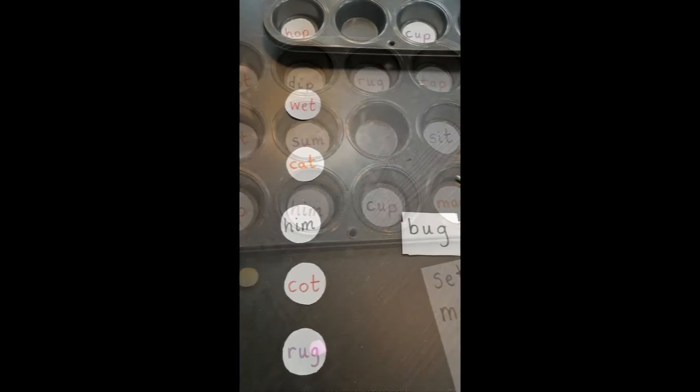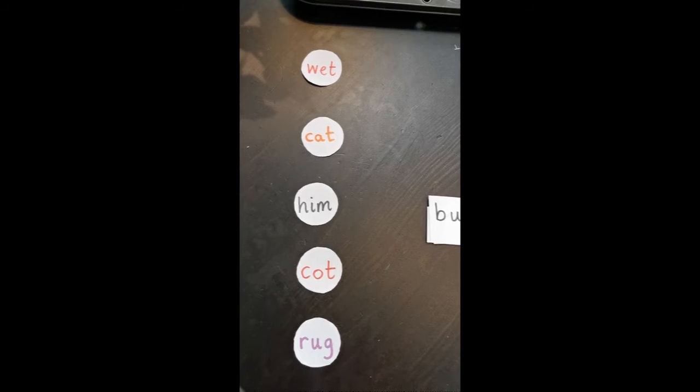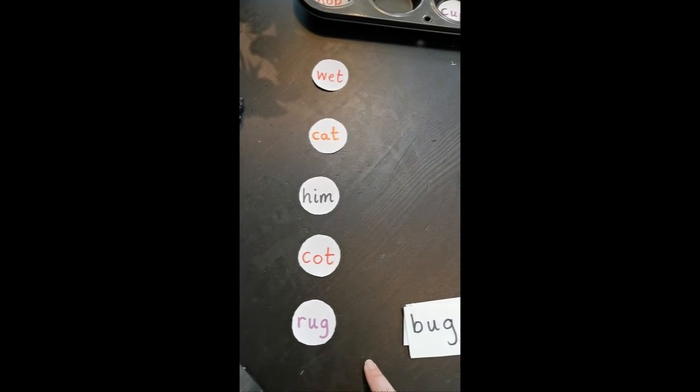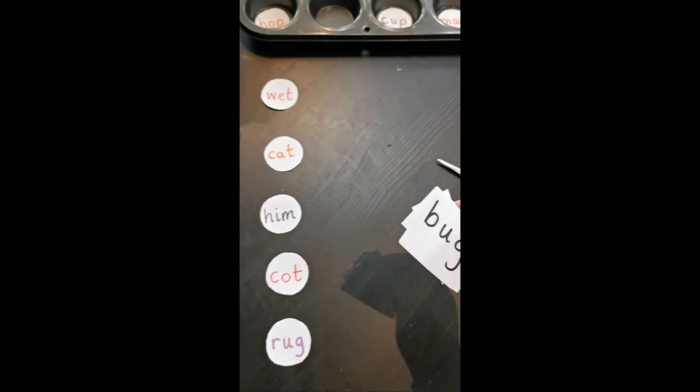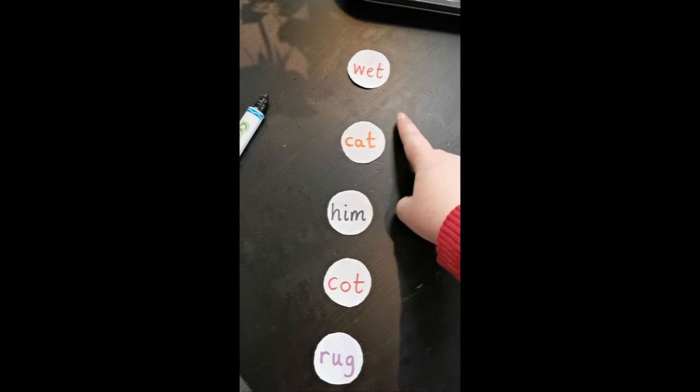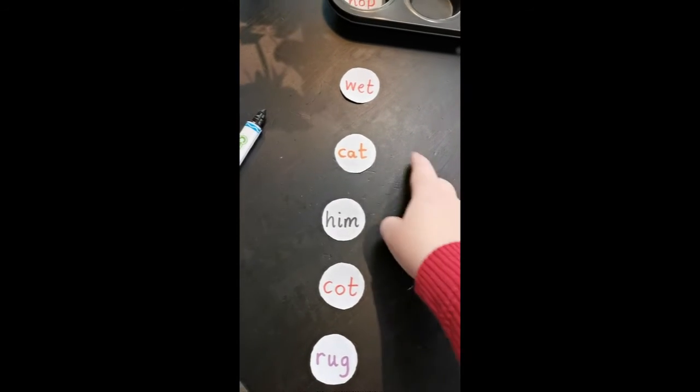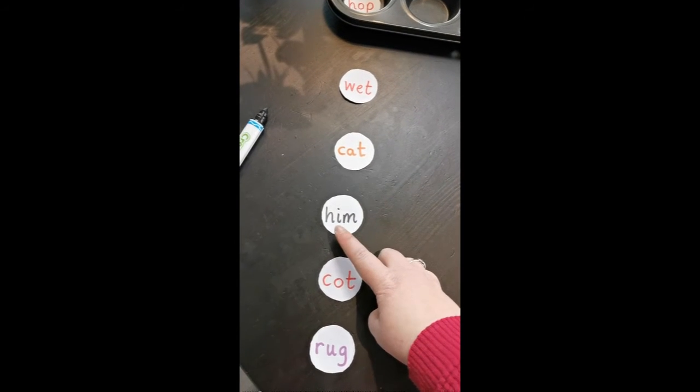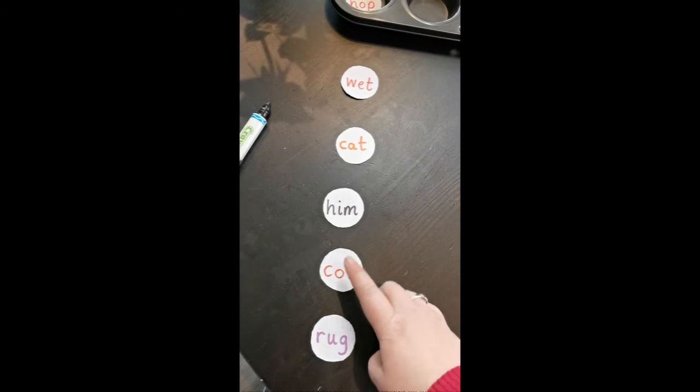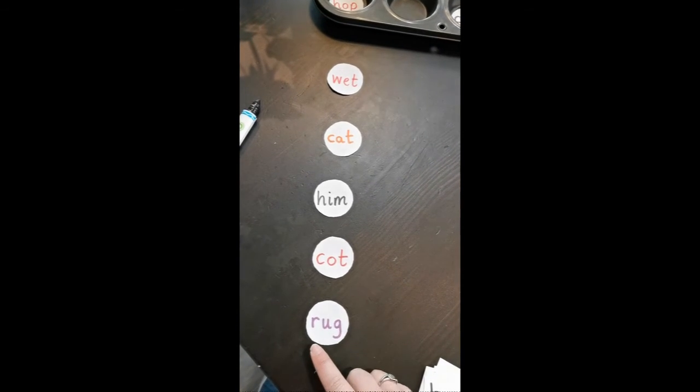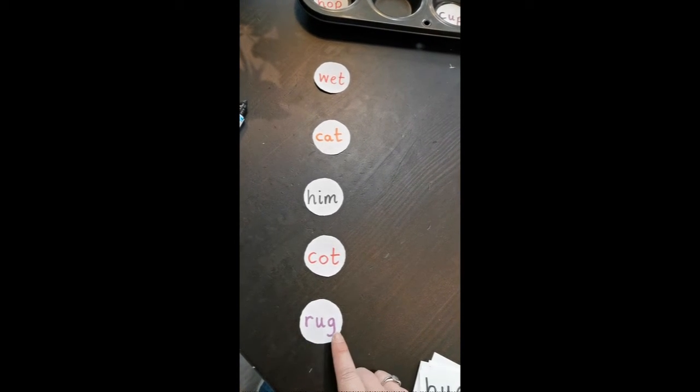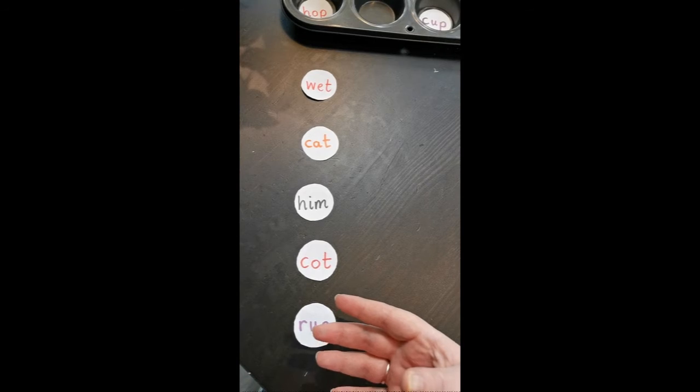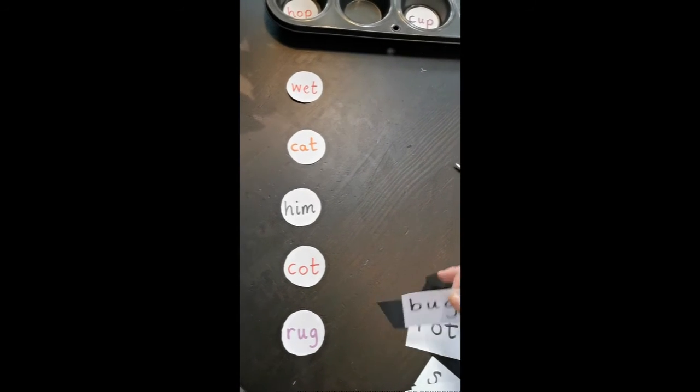Following on from that little rhyming activity, take a few of the ones that your child came up with rhyming words for. You have them written here - either you wrote them or they wrote them themselves. Remind yourselves of the words by reading through them, stretching out each one: wet, cat, him, cut, rug. Remember not to say each sound on their own, but blending them together, because that's how we hear the words.